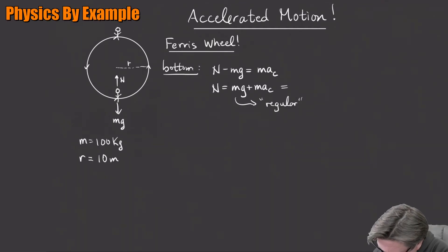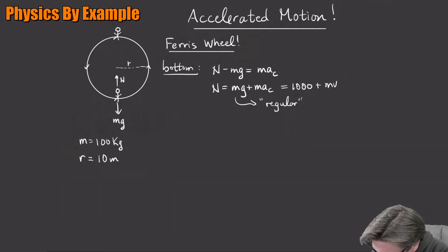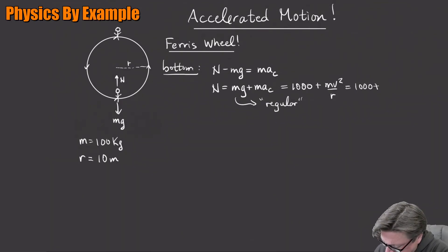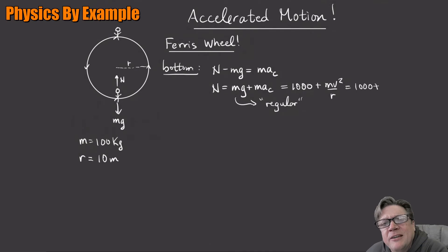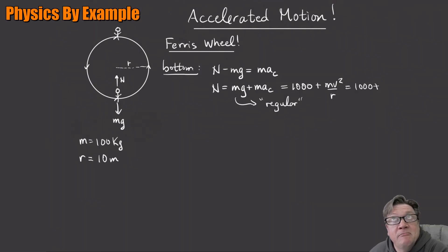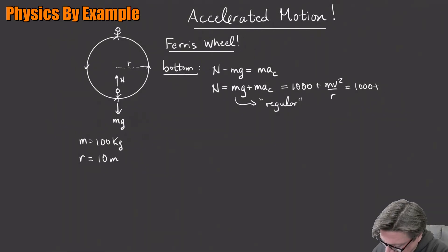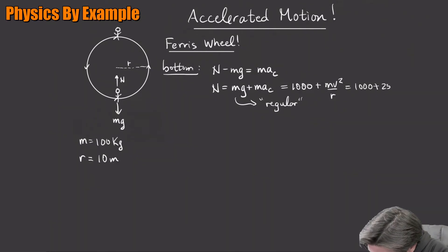So this is going to be mg = 1000 N as your regular weight, plus mv²/r. Let's say v is 5 meters per second — that's about 11 miles per hour, not too crazy fast. That gives us 100 × 25 / 10 = 250 N. So your apparent weight at the bottom is 1250 N.